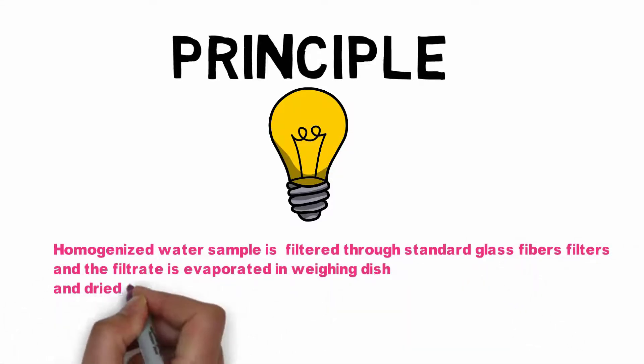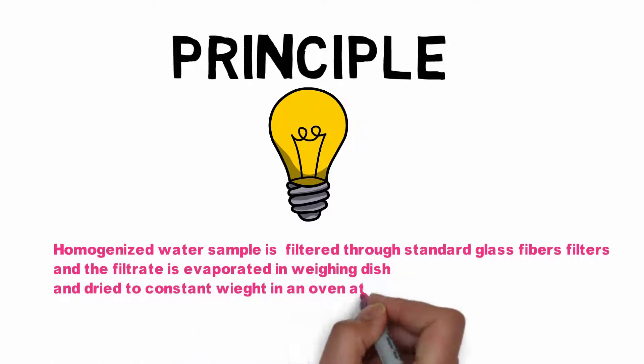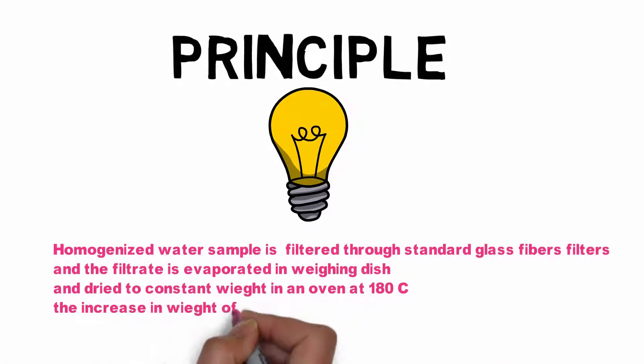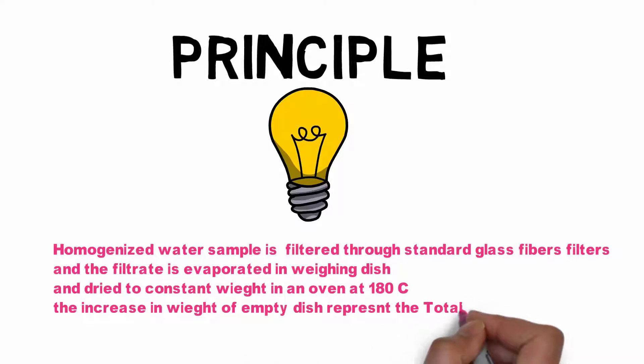The drying is done in an oven at 180 degrees Celsius. The increase in weight of the empty dish represents the total dissolved solids.